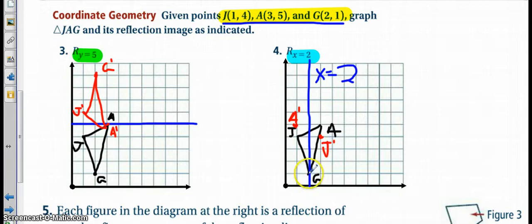And because g is on the line, my g prime is just on the line. And then we connect the dots, and we have our final triangle.